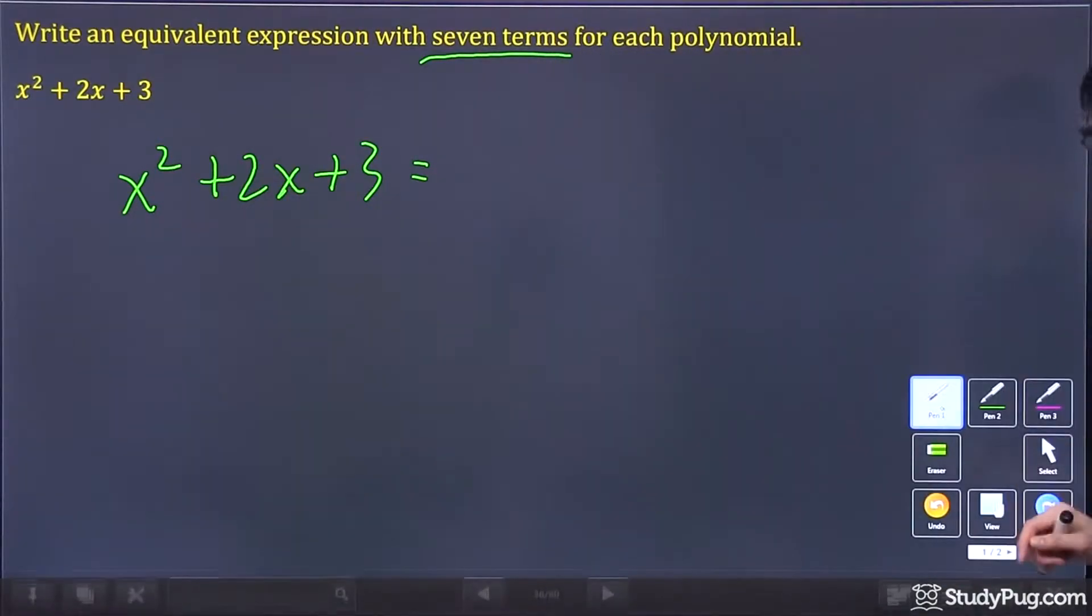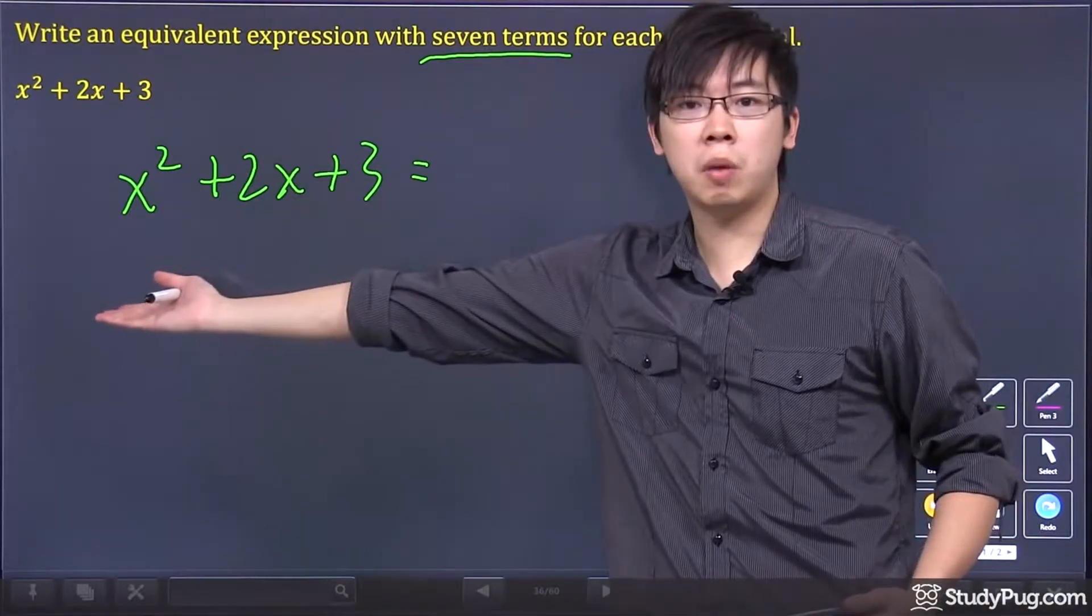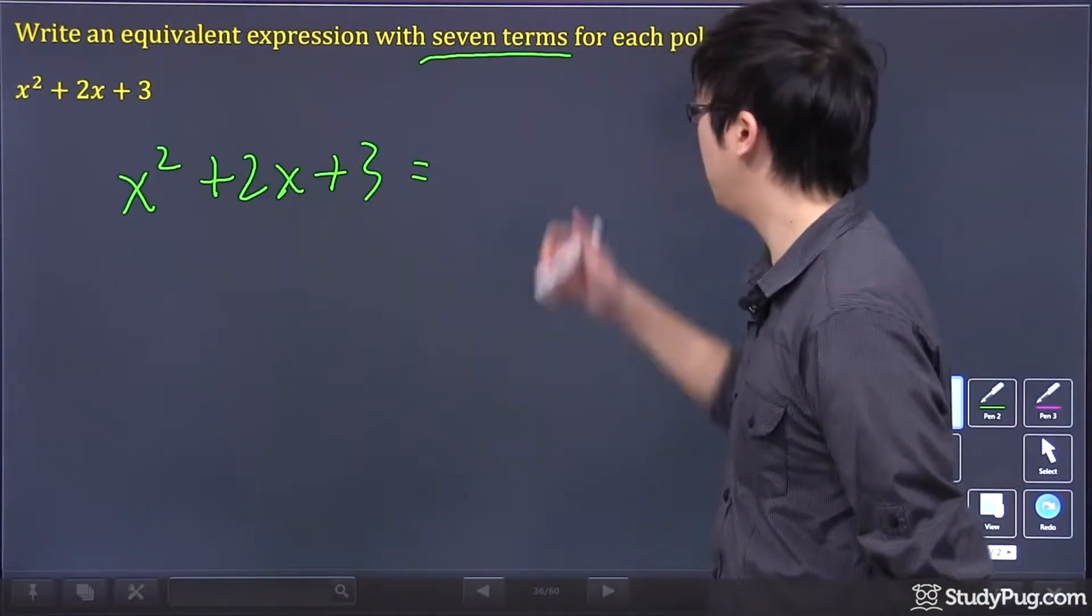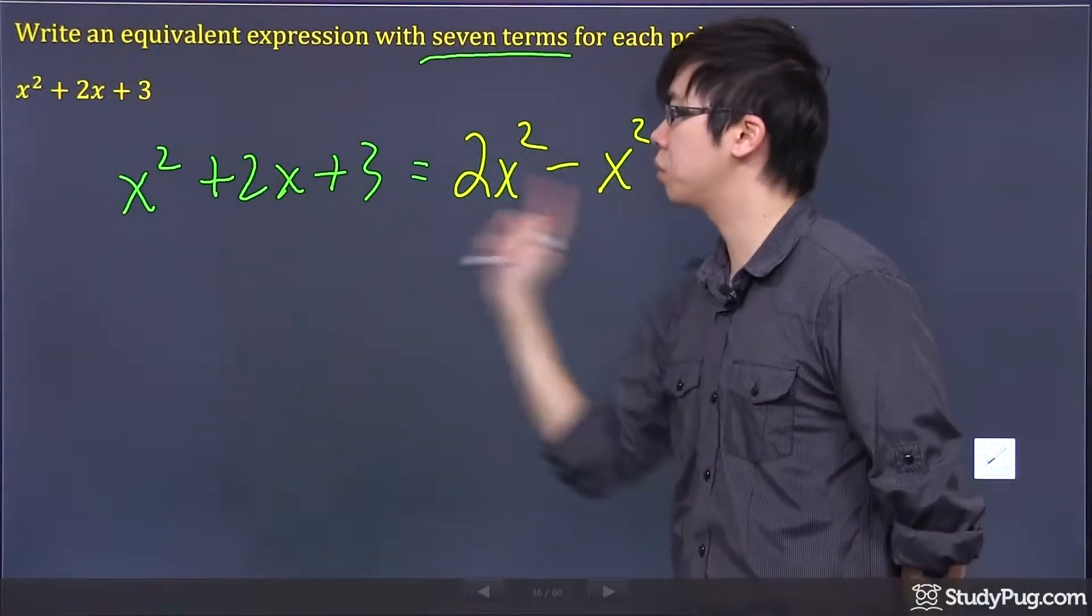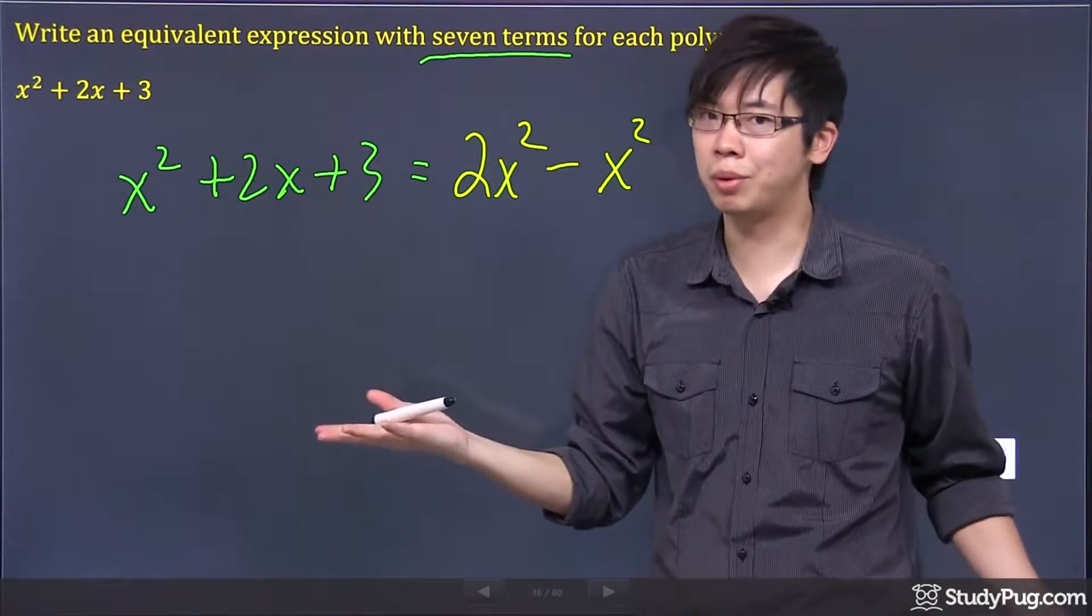I can quickly show you the first way I'm going to do this is, let's say how many ways we get an x squared. Maybe I have 2x squared minus an x squared. That will also give me 1x squared, right? Simple enough.